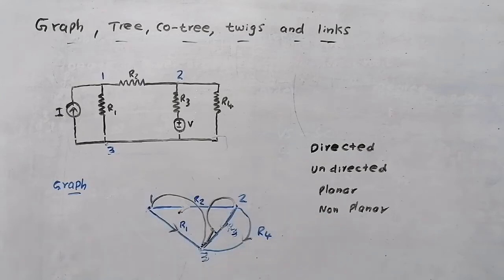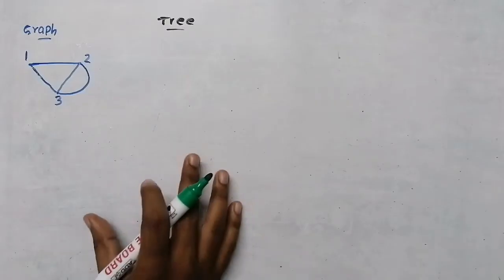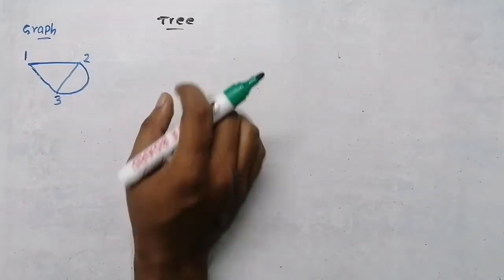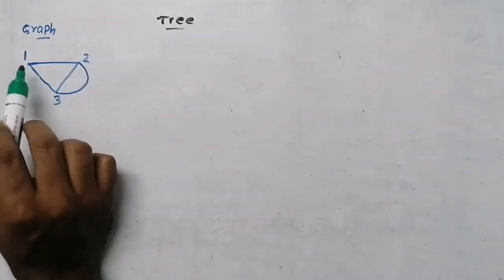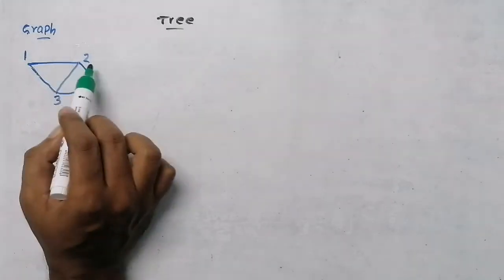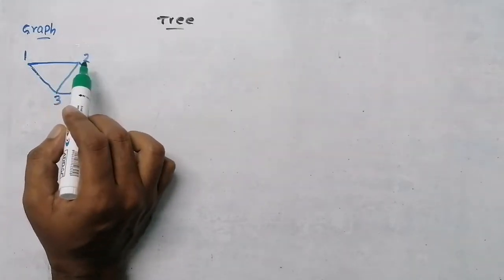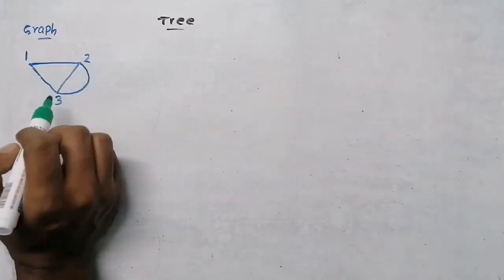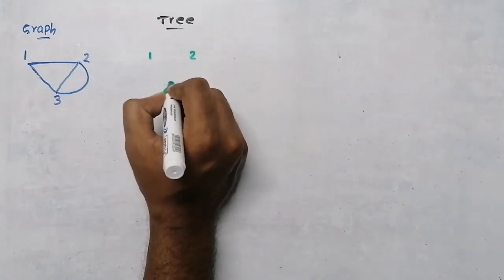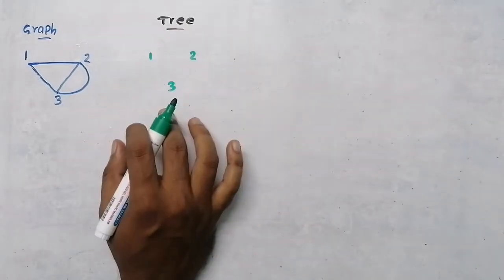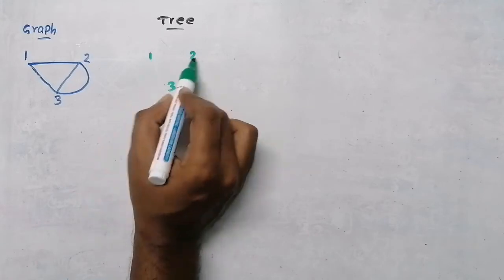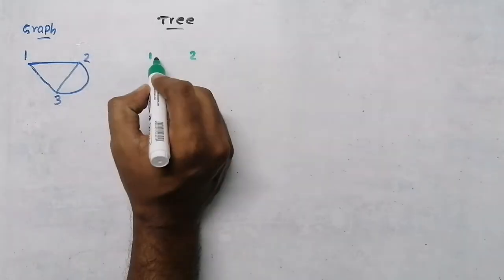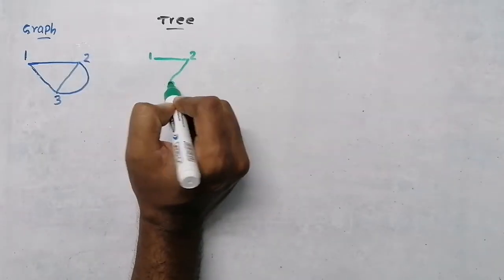A tree is also a graph, but in a tree there will not be any closed loop. In the full graph, nodes 1-2-3 form closed loops, but a tree has the same number of nodes — 1, 2, 3 — and all nodes are connected, but it will not form a closed loop. For example, connecting 1 to 2 and 2 to 3: all nodes are connected but no closed loop is formed.